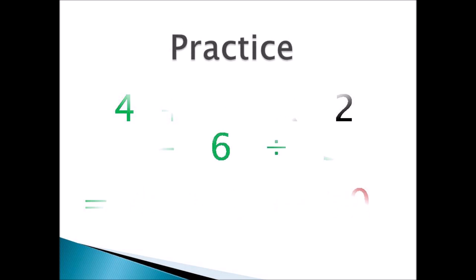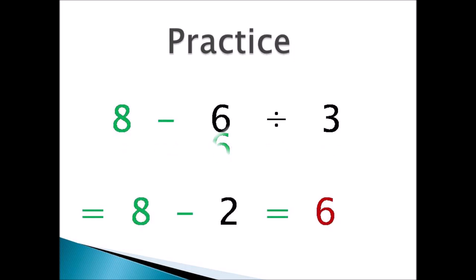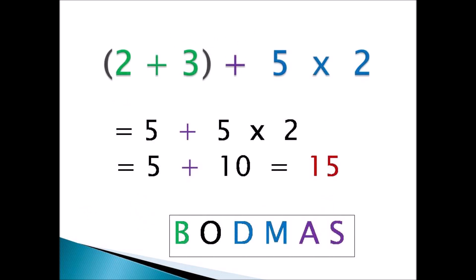Let's try another one: 8 take away 6 divided by 3. Work it quickly and see what you get. The answer is 6, because 6 divided by 3 is 2, and 8 take away 2 is 6. So you have to divide before you subtract because of BODMAS. You divide and then you subtract — work it in order.